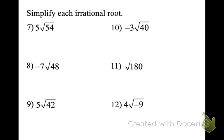Now we have coefficients. We're always going to treat the coefficient as a coefficient and the radical as the variable. I know there's a 9 in 54, so I'm doing 5 times √9 times √6. That becomes 5 times 3 times √6, which is 15√6.